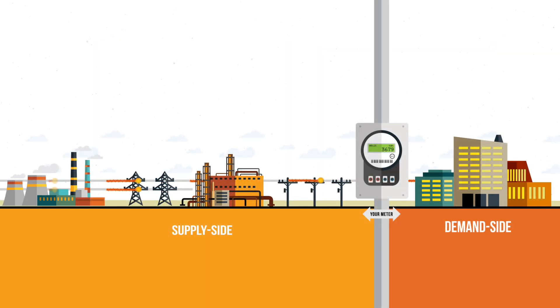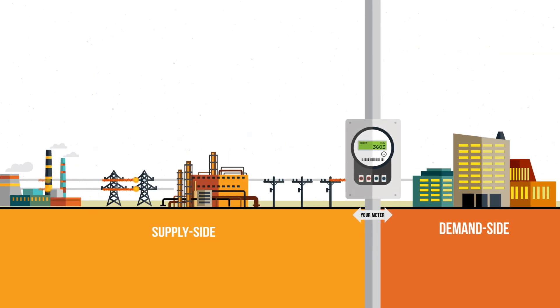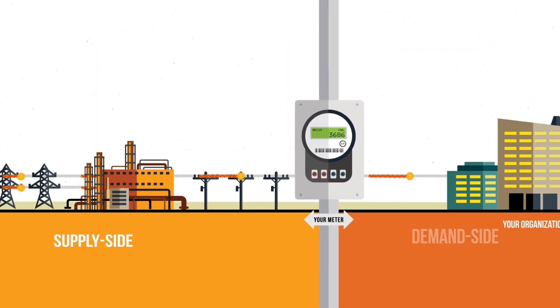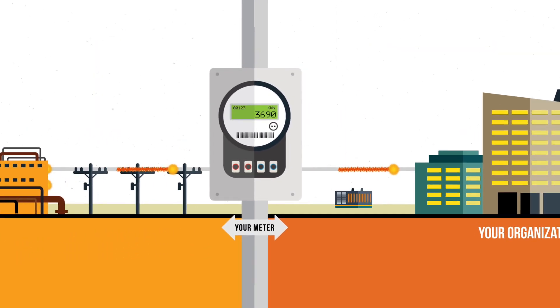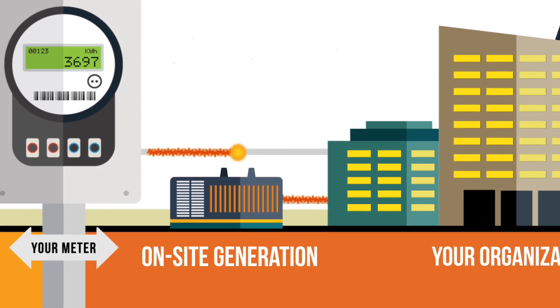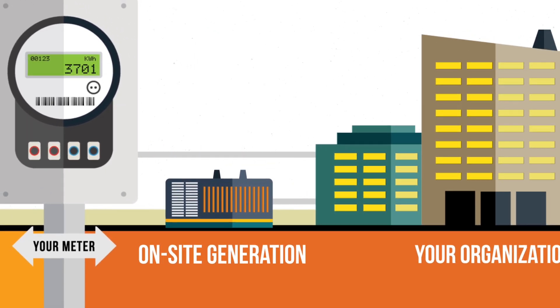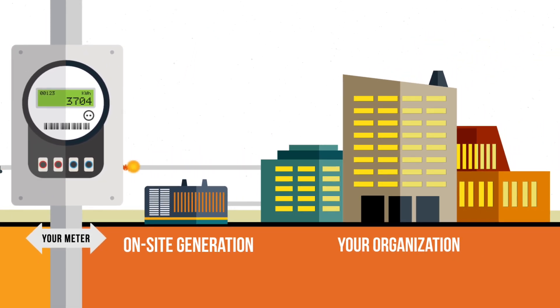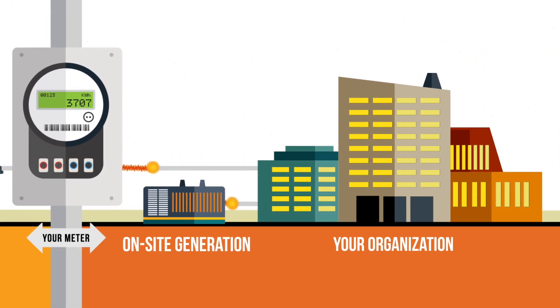Distributed generation, often referred to as on-site generation, generates power close to or at the point where it will be ultimately consumed, avoiding the costs, complexities, interdependencies, and inefficiencies often associated with transmission and distribution.